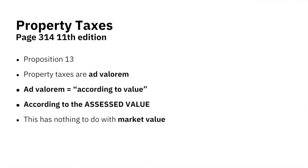So it would be unfair to have me pay 60% more in property taxes just because my house went up 60% in the last three years. In 1978, California voters passed something called Proposition 13. Proposition 13 basically says property taxes are ad valorem — you'll see that term at the middle of page 314. It means according to value: we pay property taxes according to the value of our property.